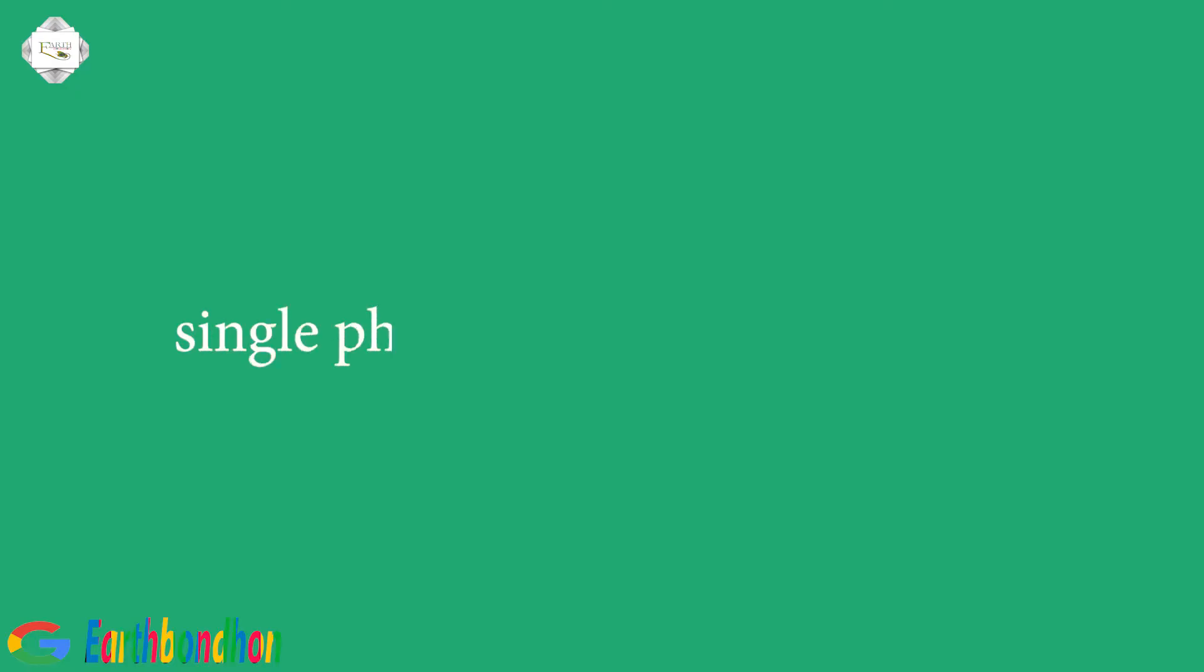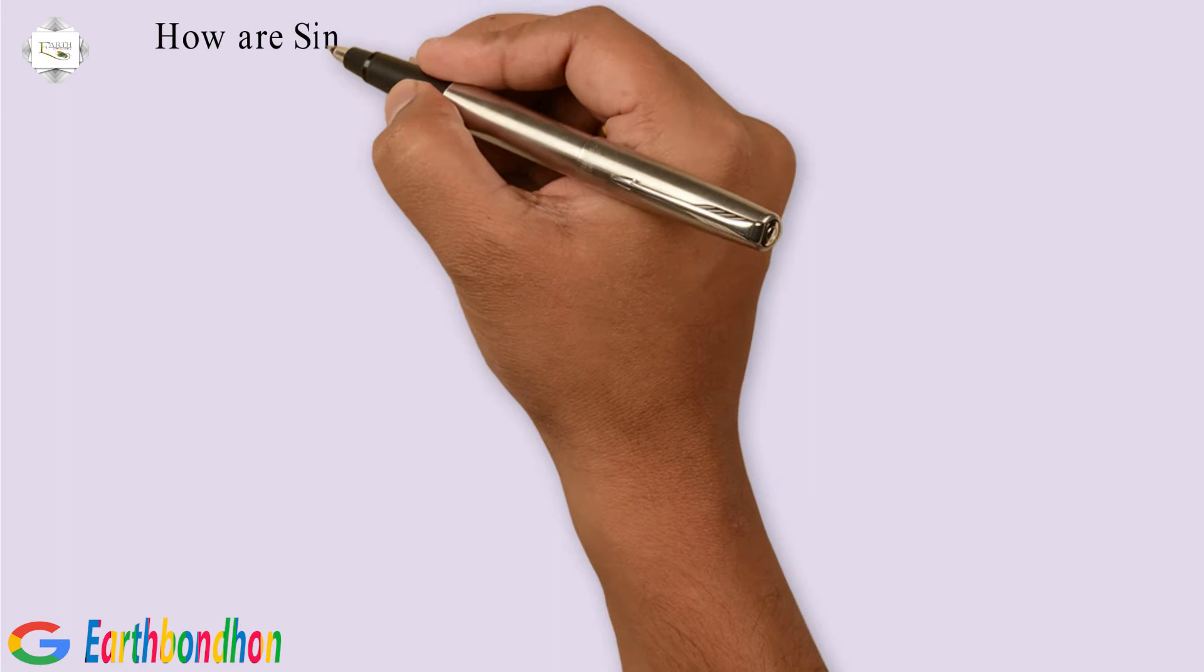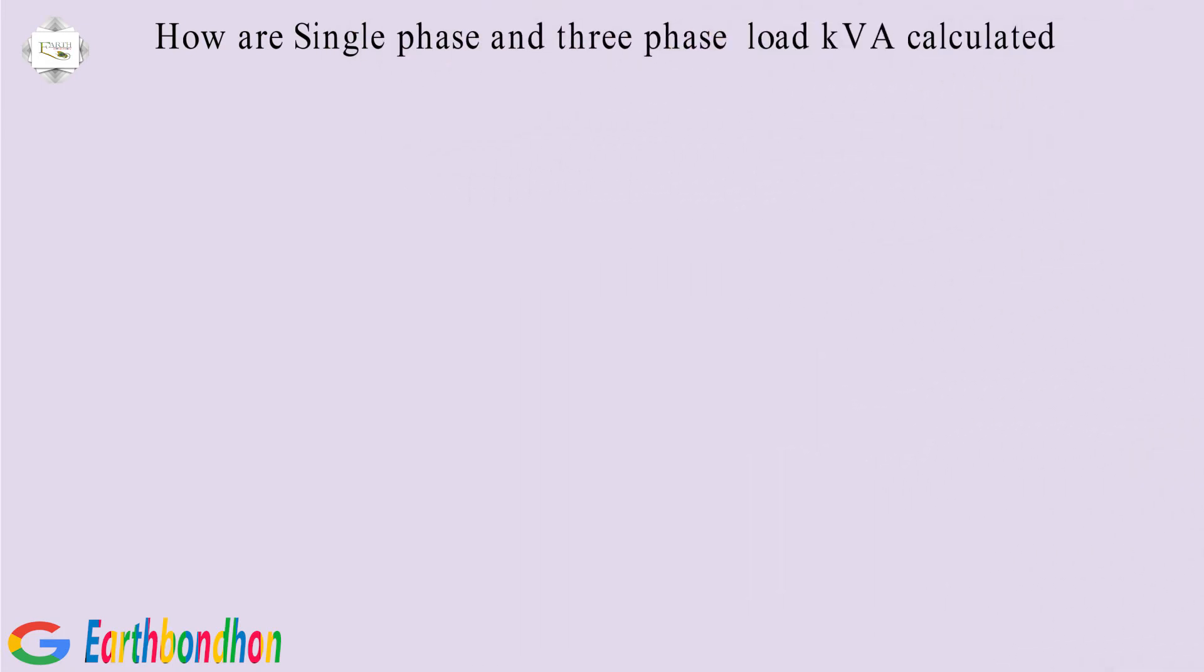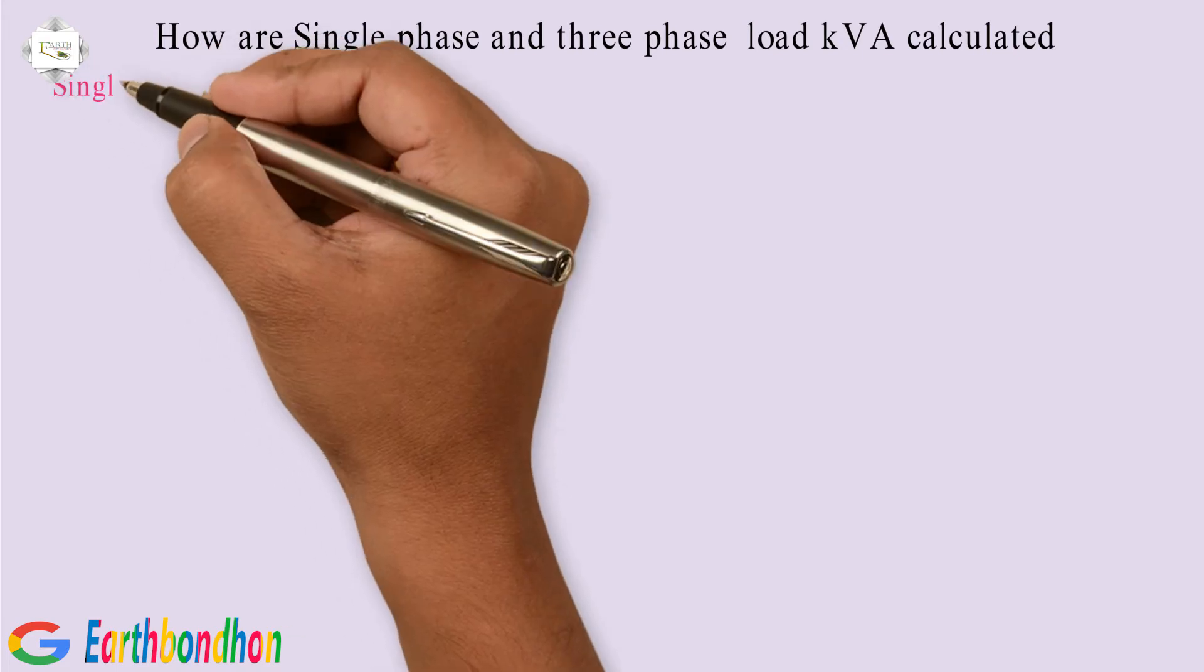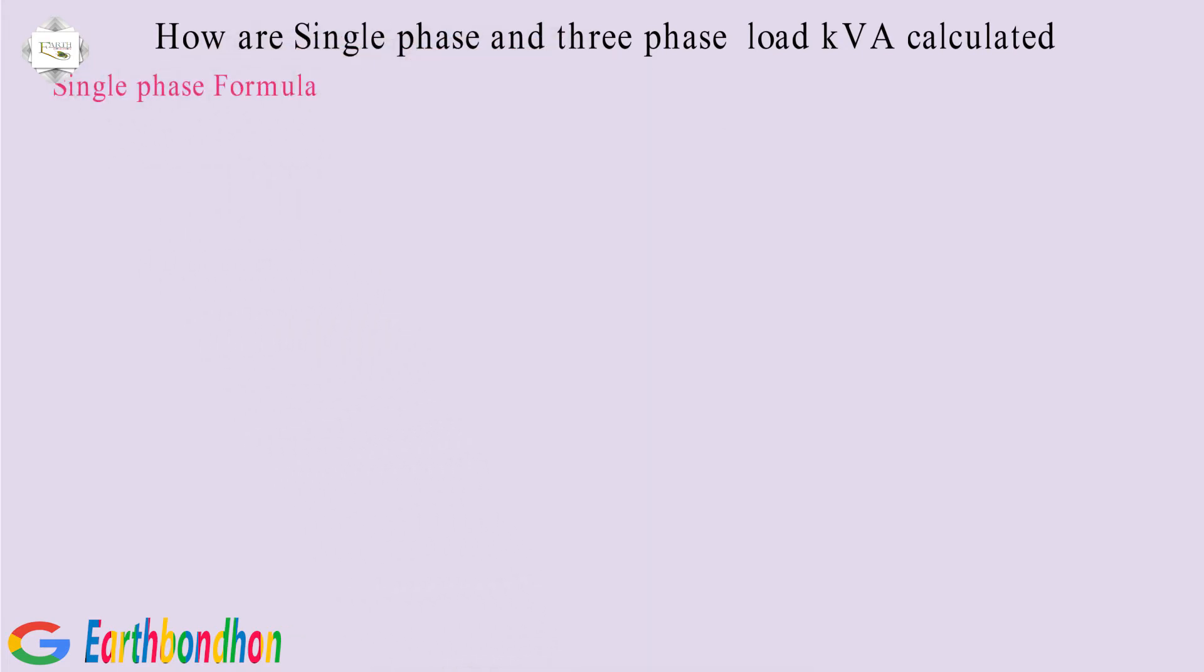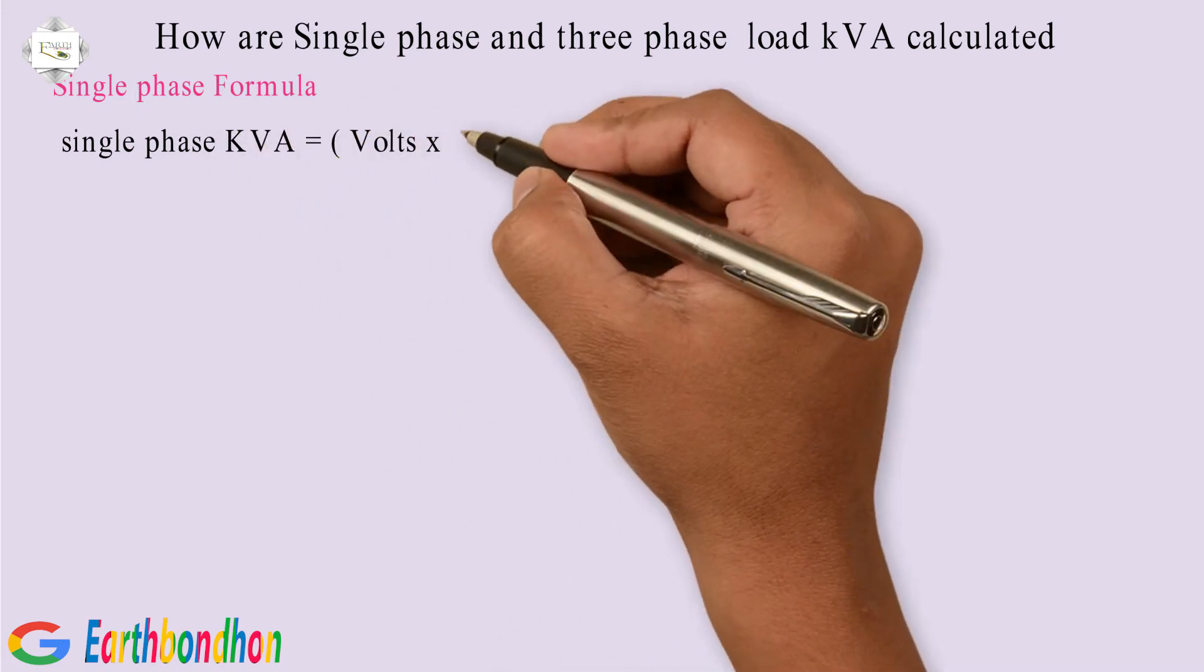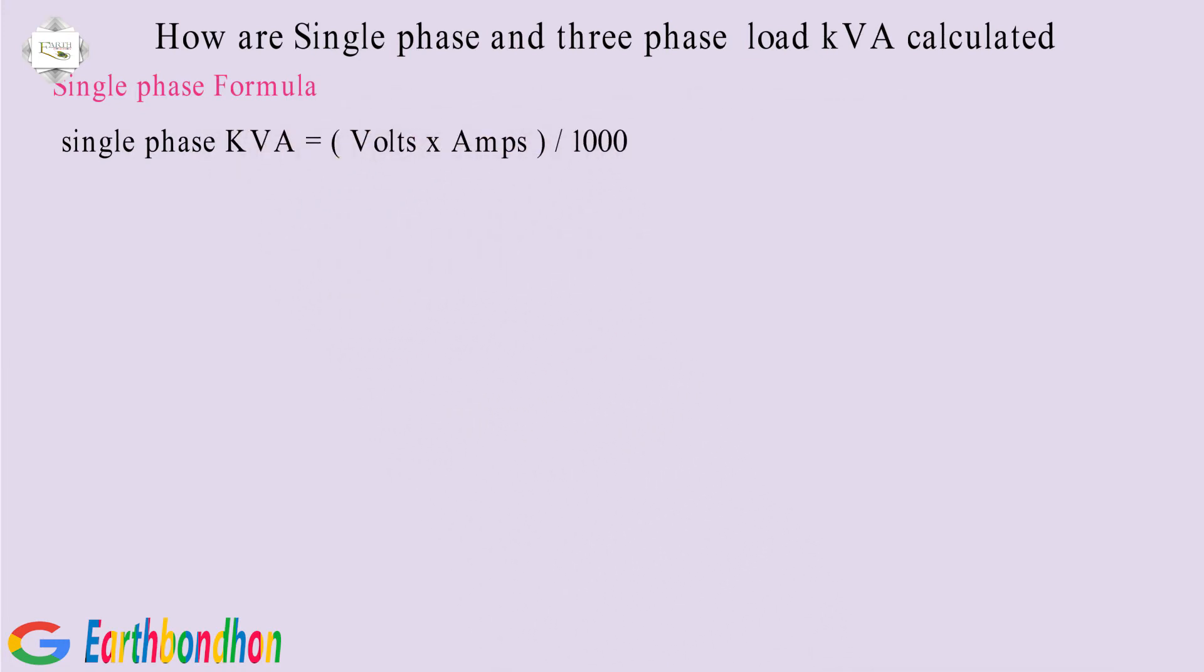Single Phase KVA Calculated. How are Single Phase and Three Phase Load KVA Calculated? Single Phase Formula: Single Phase KVA equals volts multiplication amps division 1000.